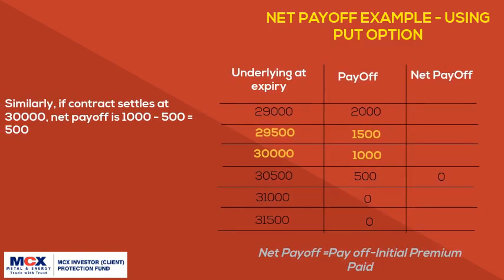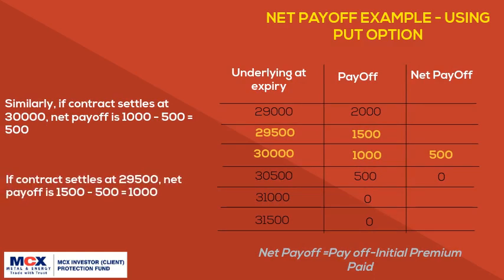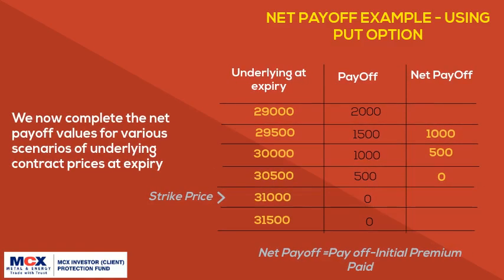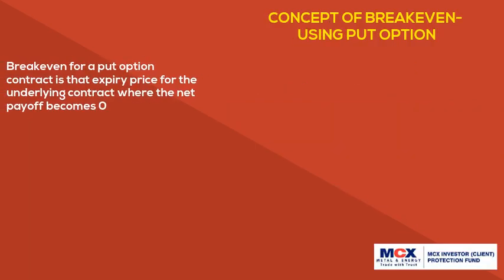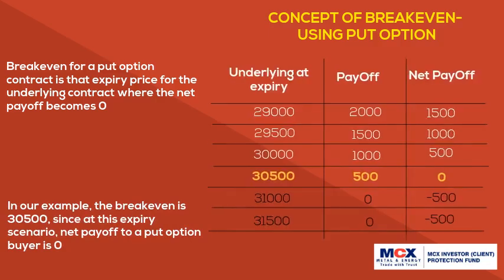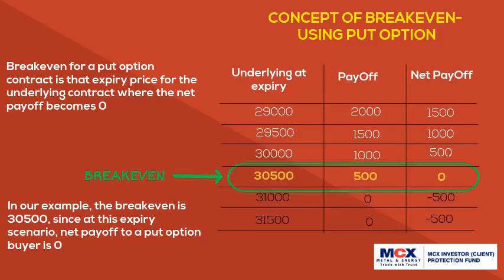Similarly, if the contract settles at 30,000, net payoff is 1,000 minus 500, which is 500. If the contract settles at 29,500, net payoff is 1,500 minus 500, which is 1,000. The break-even for a put option contract is the expiry price at which the net payoff becomes 0. In our example, the break-even is 30,500, since at this expiry scenario the net payoff to a put option buyer is 0.